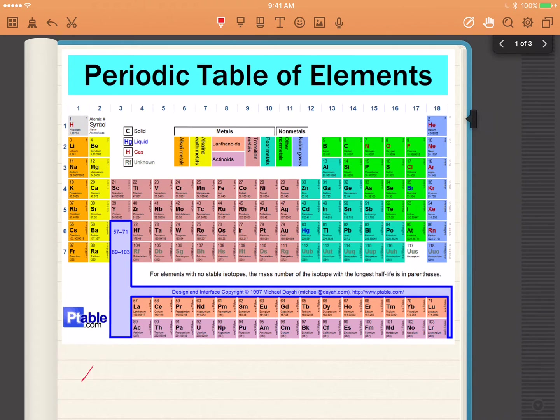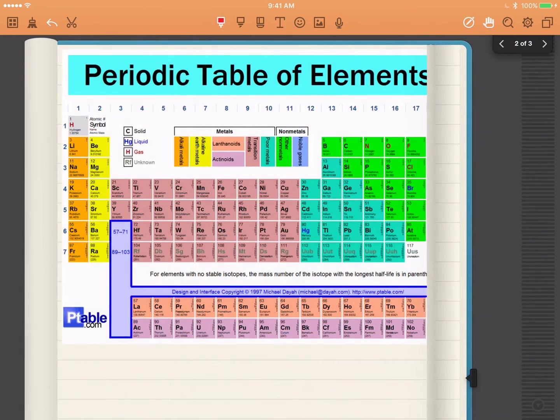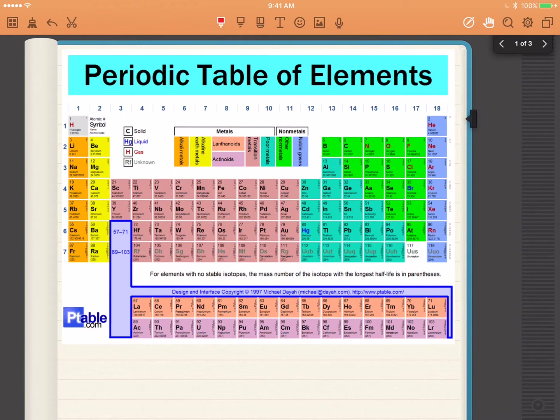The nitrogen has 14.0067, and the oxygen has 15.9994.